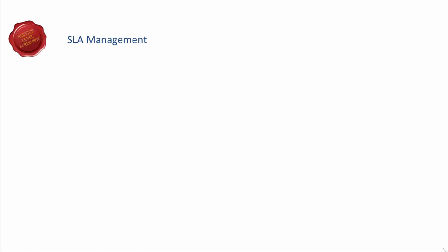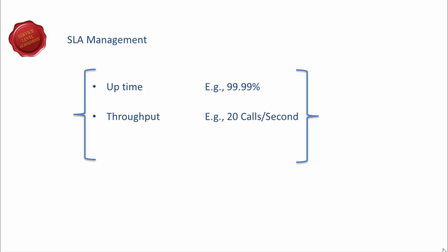SLA stands for service level agreement. An example SLA from an API perspective might guarantee 99.99% uptime, a maximum rate of 20 calls per second without performance degradation, and support via email only. SLA does not have to be the same for different types of APIs — it is typical to have SLA tiers. For example, internal developers can get unlimited rate access, whereas a public developer may be restricted to 20 calls per minute for the same API.